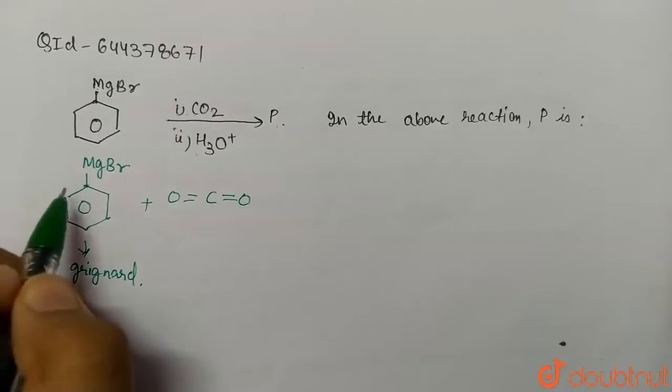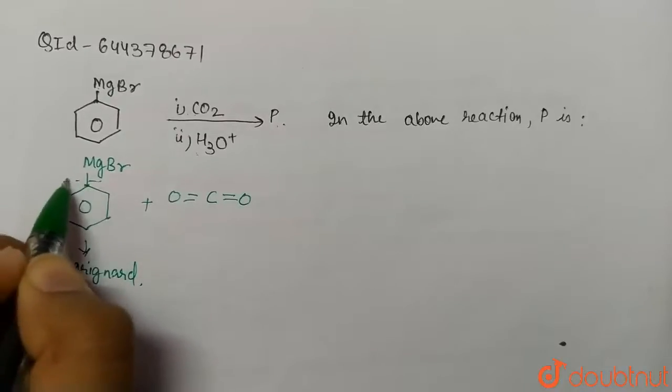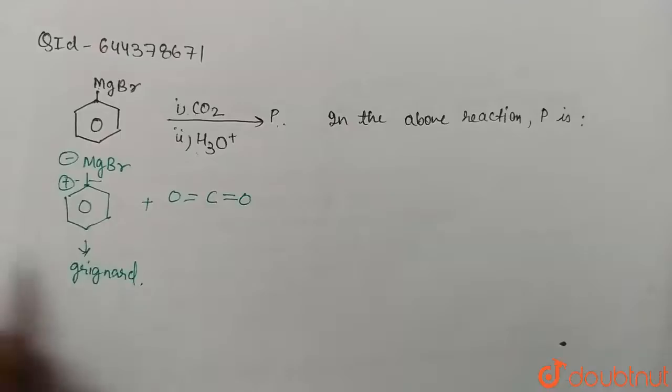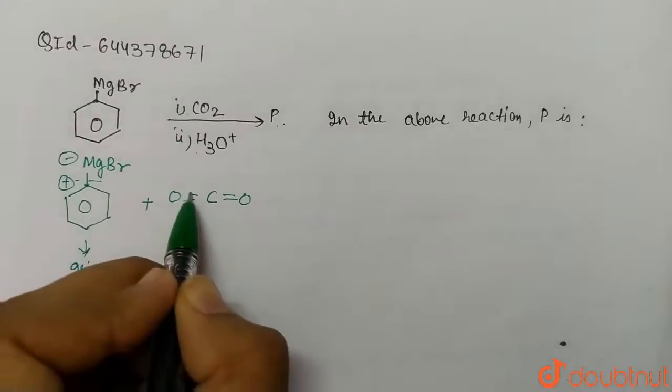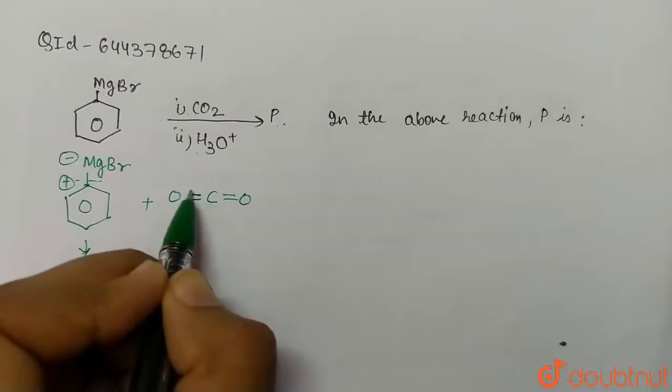Since it acts as a Grignard reagent, this will break as positive and here we get negative, giving us R+ and MgBr-. Now we can see that the double bond oxygen partially shifts its electrons to the other oxygen, creating a partial negative charge here and partial positive charge there.